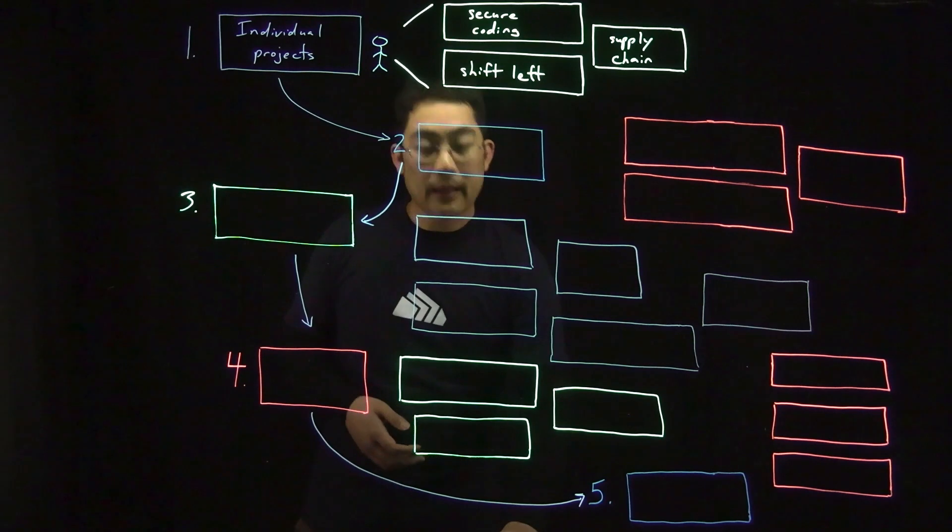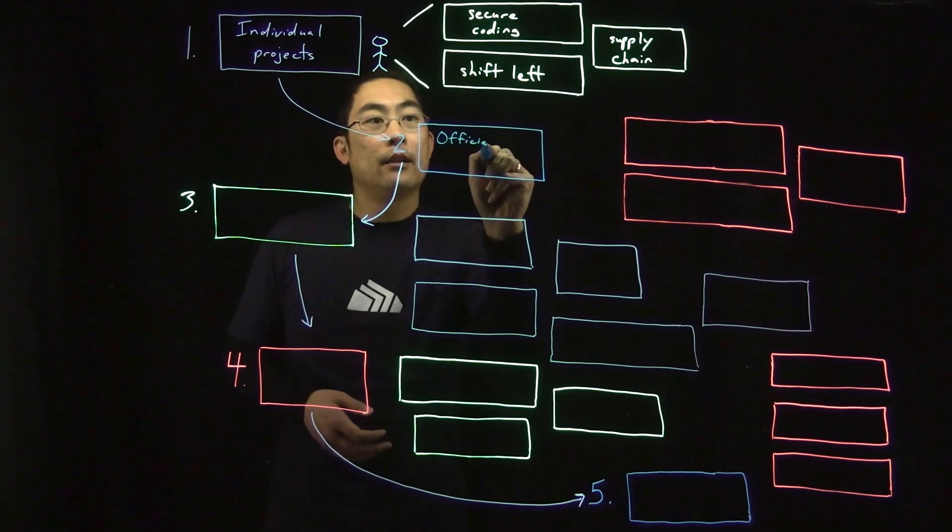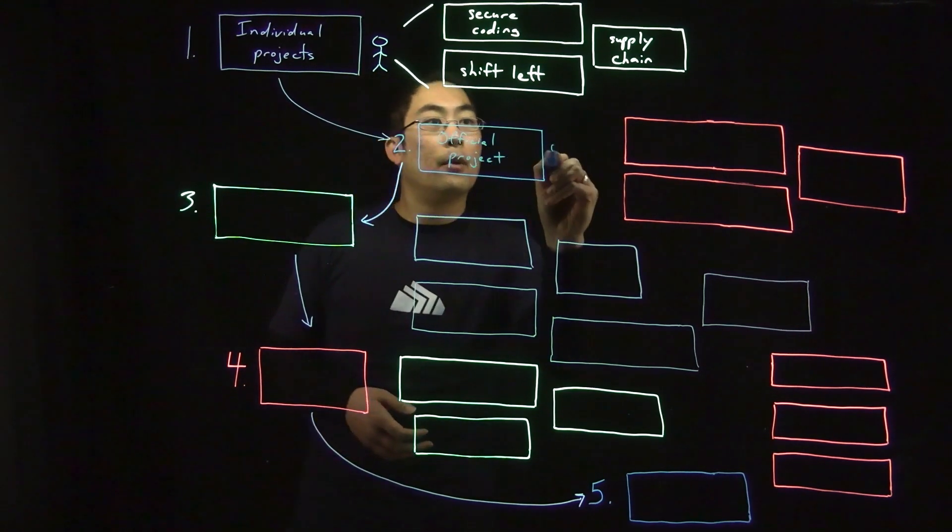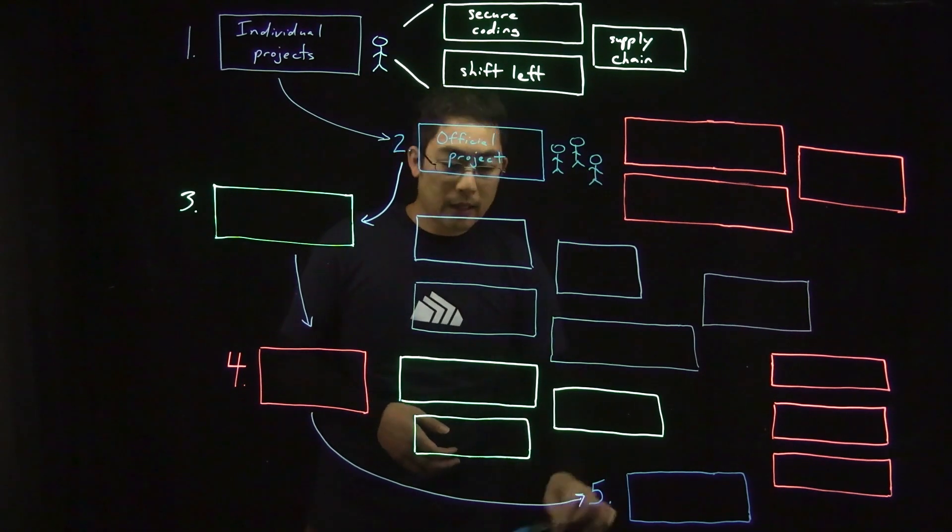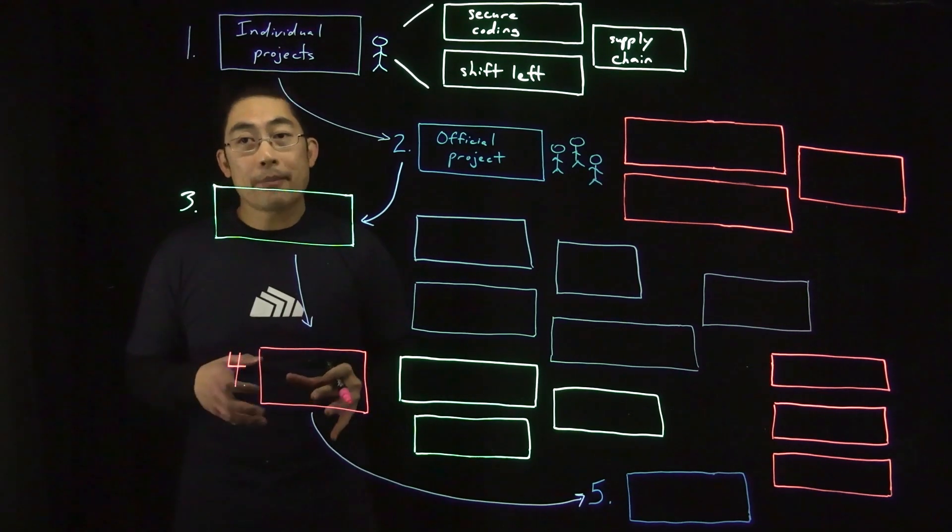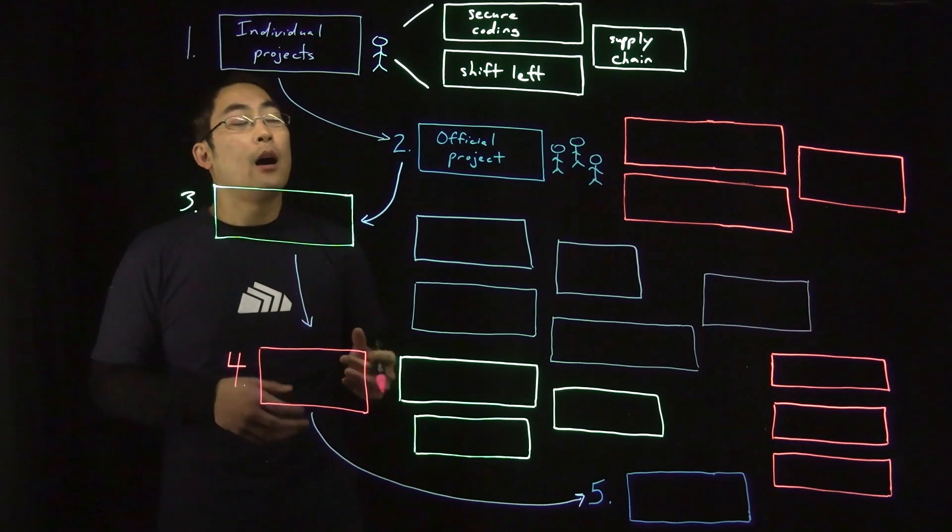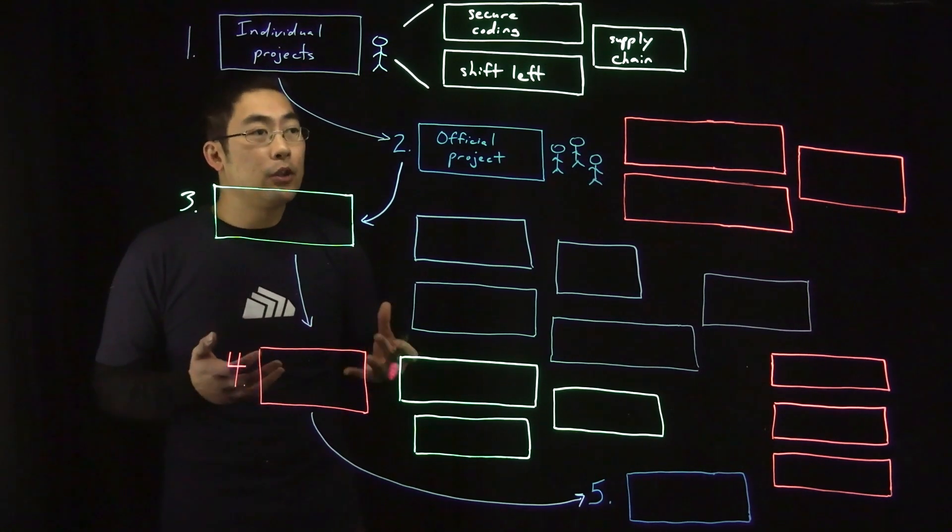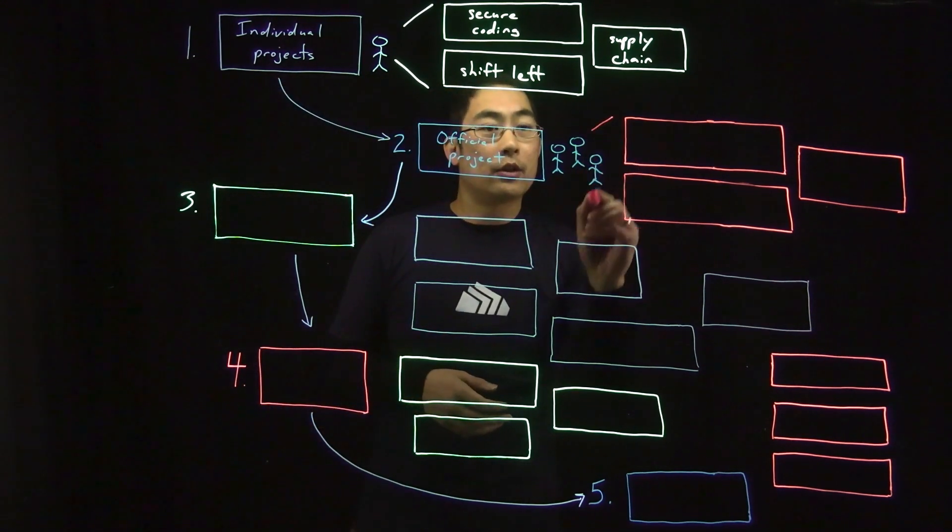At the second stage, this is really when the organization has an official containerization project. Here, you have multiple people working together to prove out the benefits of containerization and cloud native technologies. This might mean you're containerizing an existing app, or part of an existing app, for instance, a stateless component like a web tier, or it might mean that you're building a new application using containers and perhaps microservices architectures as well.